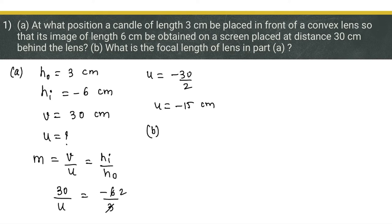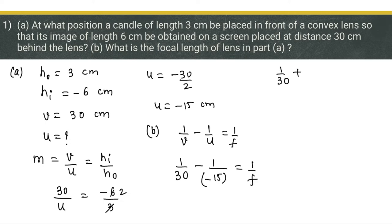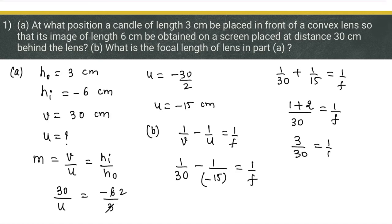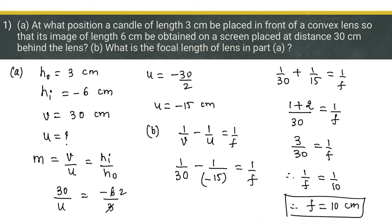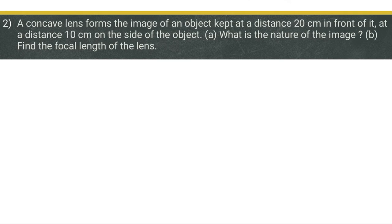In part B, we find the focal length using the lens formula: 1/v - 1/u = 1/f. Substituting v = 30 and u = -15: 1/30 + 1/15 = 1/f. Taking LCM of 30, the numerator gives 1 + 2 = 3, so 3/30 = 1/f, giving f = 10 centimeters.